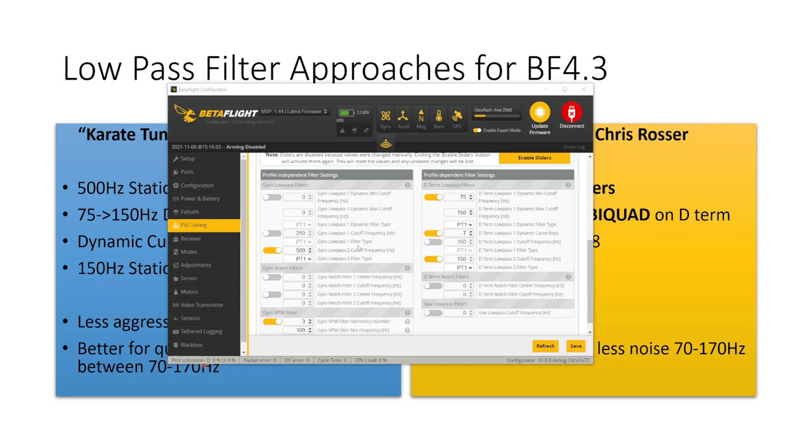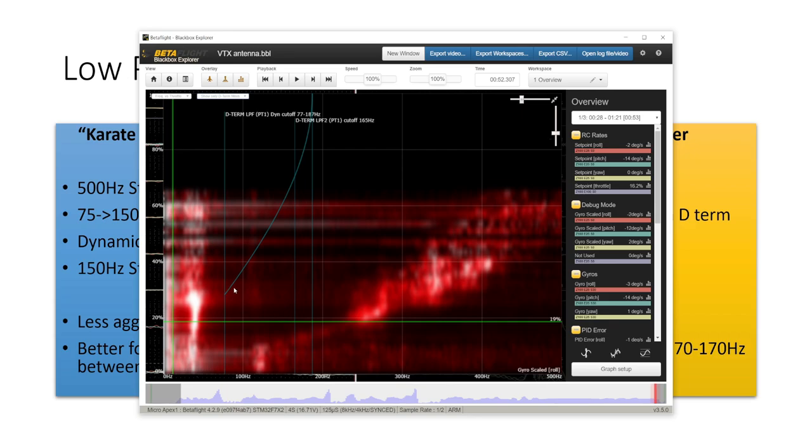So these are the settings for the karate tune. You can see we have a 500 hertz static low pass filter PT1 type on the gyro and then a 75 to 150 hertz dynamic PT1 low pass filter on the D term as well as a 150 hertz static PT1 filter on the D term as well. You can see that the dynamic filter has this curve expo of seven and if we look at a black box log you can see what this dynamic curve expo does. It means that the filter cutoff rises much more quickly with throttle initially and then flattens off at high throttles and this means that we get out of the zone where we have a low cutoff very very quickly and that gives a benefit in terms of filter delay.